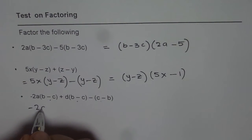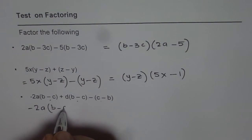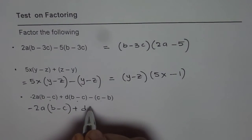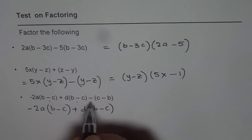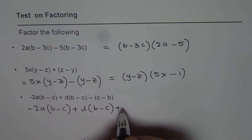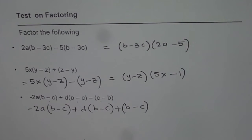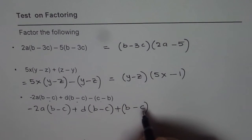So first we will write this as -2a times b minus c plus d times b minus c. We will change the sign. Negative of negative becomes positive. So we will write b minus c here. Check it out. If you open you get minus c plus b. Same thing. Do you see that? So it works. That is how you should be doing it.